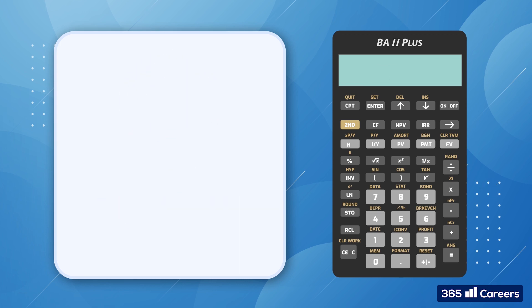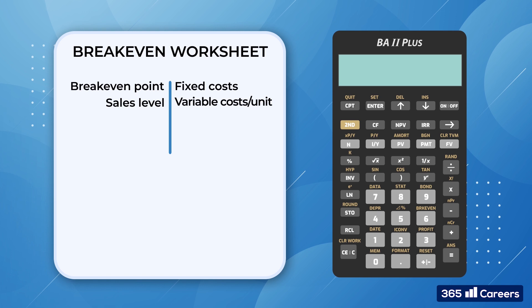Before we wrap up the topic, let's examine the break-even worksheet. It helps you calculate a company's break-even point as well as the sales level needed to reach a certain profit level. To do that, we need to analyze the relationship among fixed costs, variable costs per unit, quantity, price, and profit.